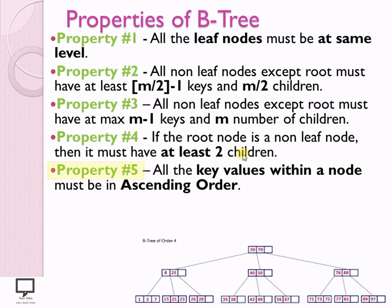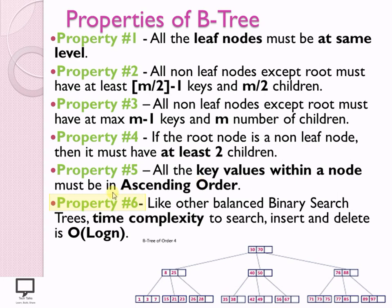Property number 5 deals with the order in which keys are stored in every node. Since this is an m-ordered B-Tree where m minus 1 keys can be present in every node, all values must follow ascending order within every node. While inserting an element, we need to find the proper position to maintain ascending order. Property number 6 covers time complexity: for all operations — search, insert, or delete — the time complexity is O(log N).